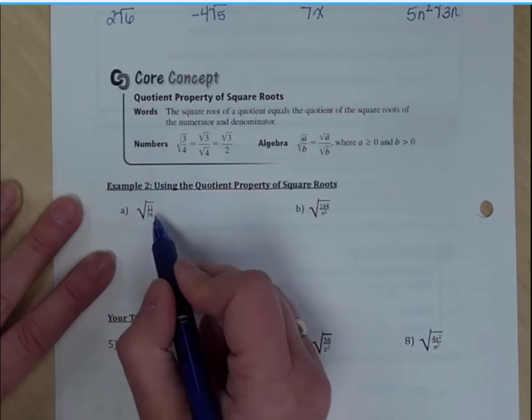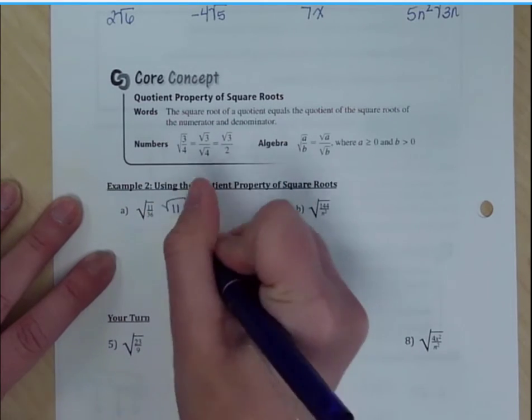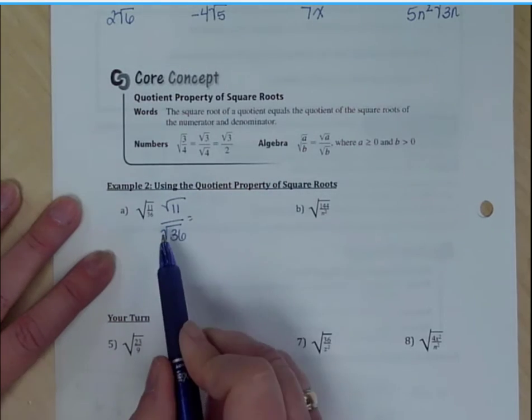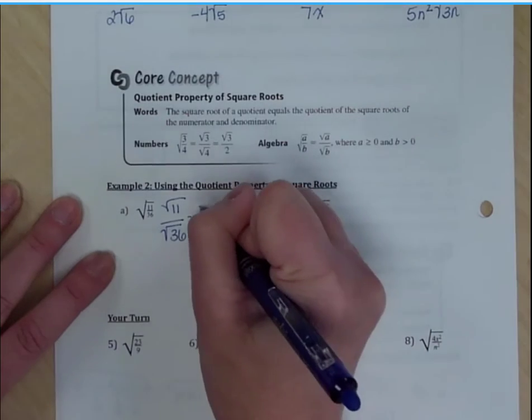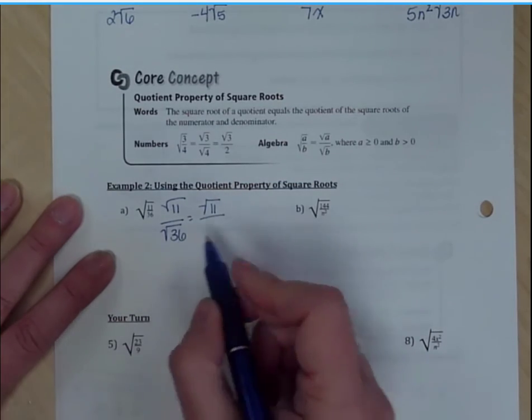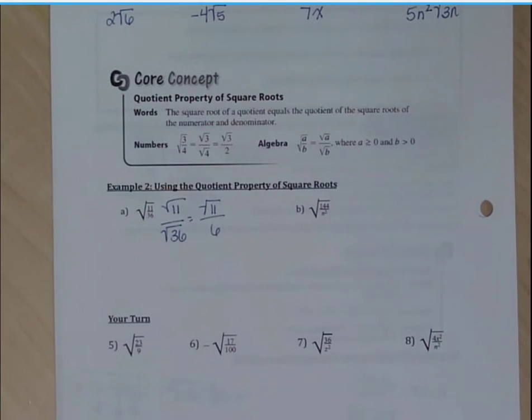I have the square root of 11/36. So I'm going to find the square root of 11 and the square root of 36. 11 doesn't have any perfect square factors, so that will remain the same. And the square root of 36 is 6. My final answer is the square root of 11 over 6.